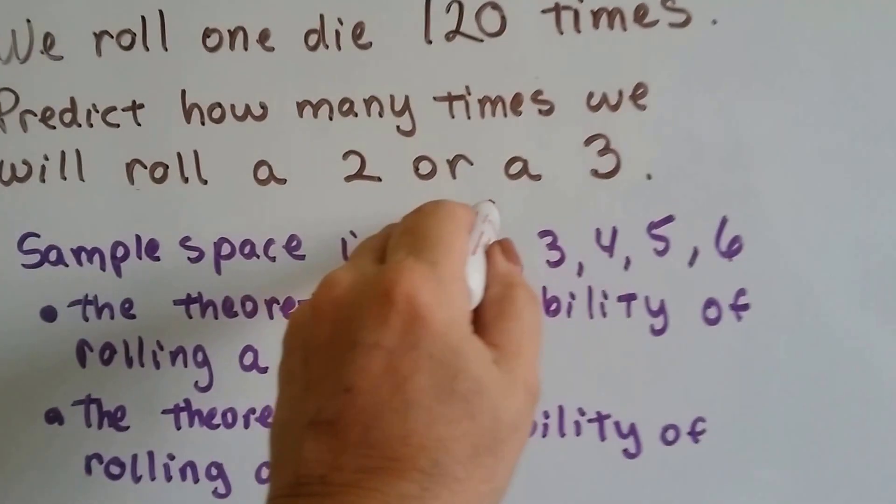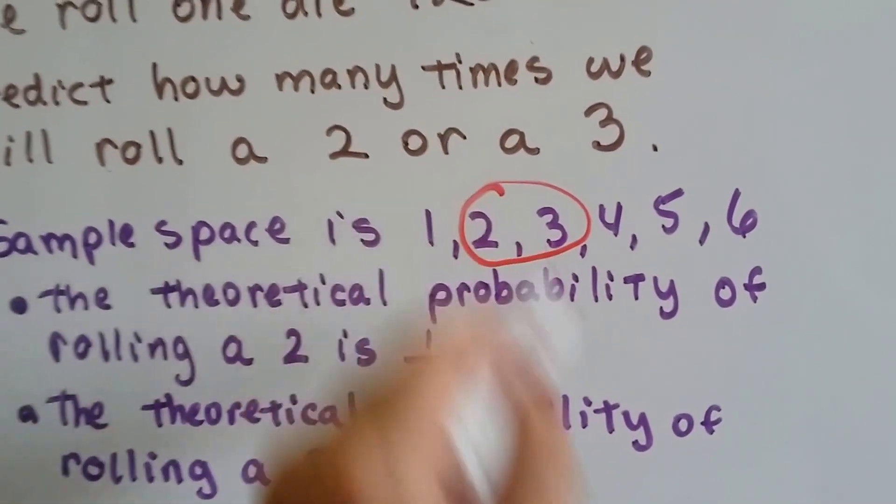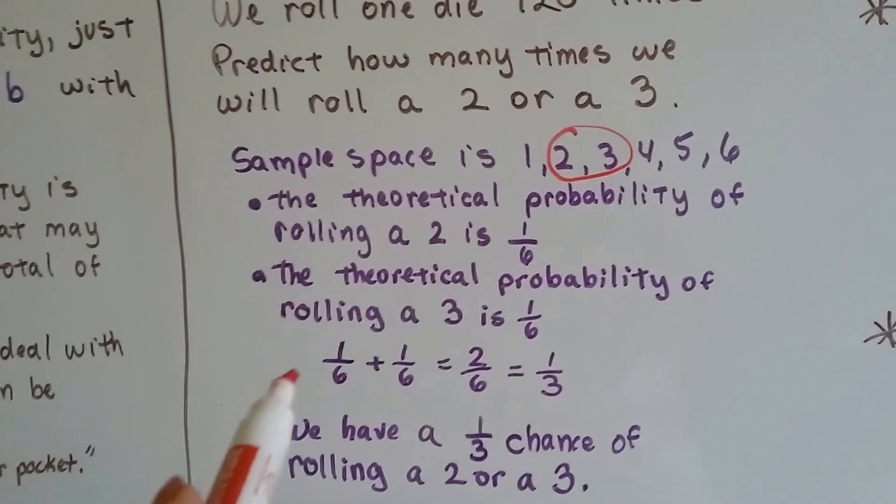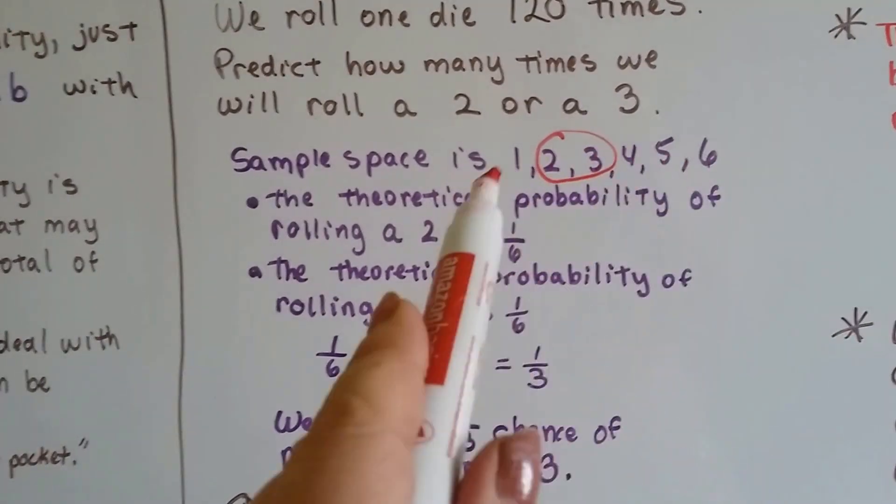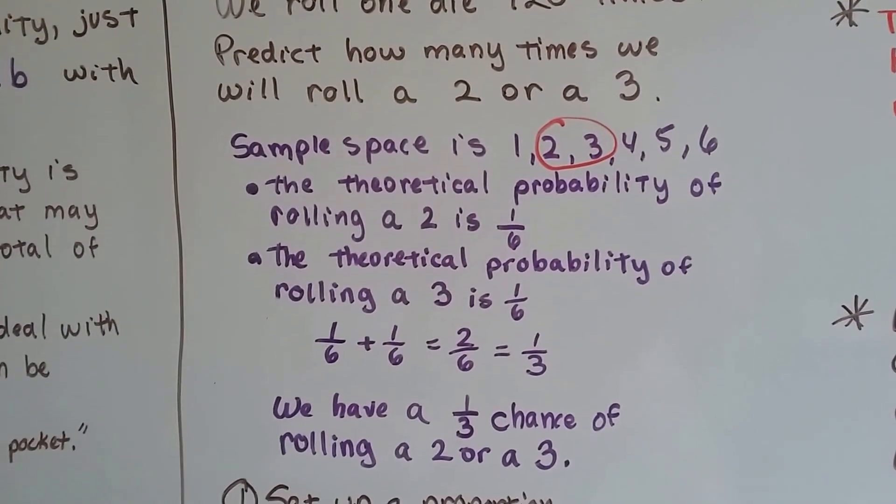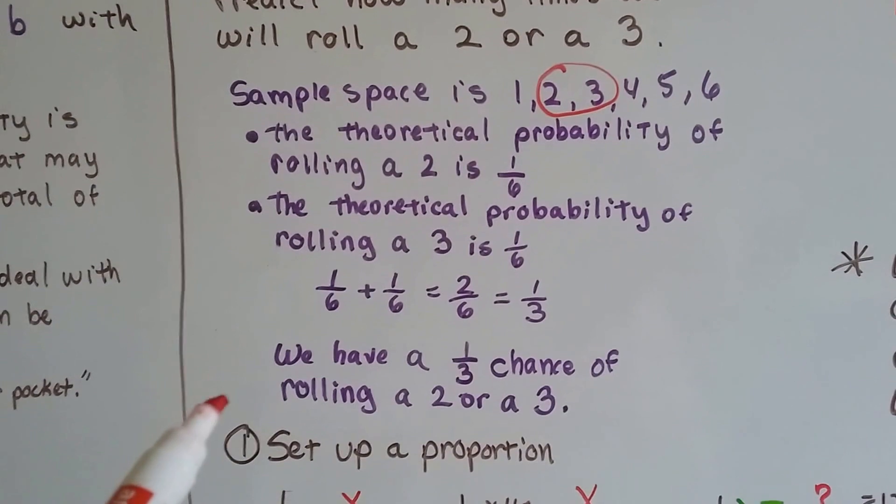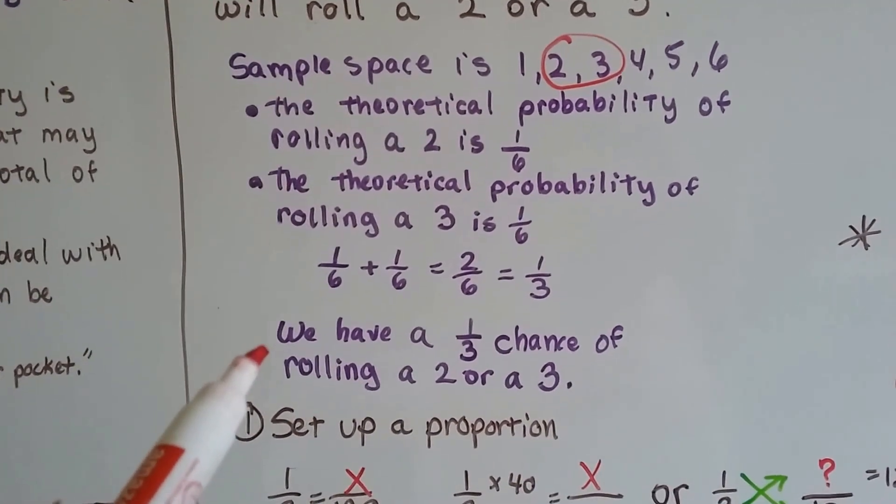The probability of rolling a 2 or a 3 is 1 third, because now it's 2 chances out of 6. So we have a 1 third chance of rolling a 2 or a 3.